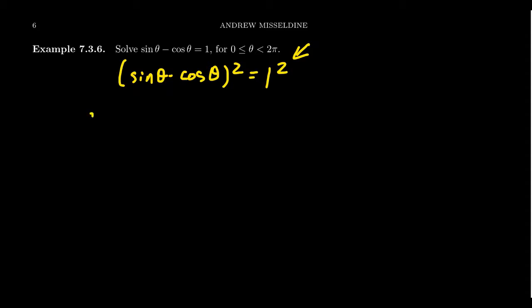On the left-hand side, if we FOIL, we end up with sine squared theta minus 2 sine theta cosine theta, and then we get a plus cosine squared theta. On the right-hand side, we get 1.